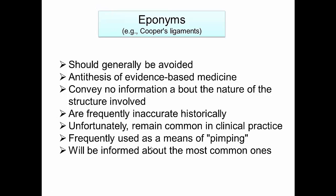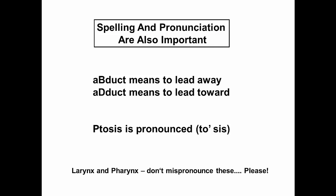Eponyms — for instance, Cooper's ligaments — should actually usually be avoided. They are kind of the antithesis of evidence-based medicine. They don't convey any information about the nature of the structure involved, and they're frequently inaccurate historically, since the person being commemorated was by no means the first to describe the structure. Eponyms are unfortunately quite common in clinical practice and are frequently used as a way of hazing less experienced staff, such as surgical residents. We will inform you about commonly used eponyms, but they should be avoided in your professional communications.